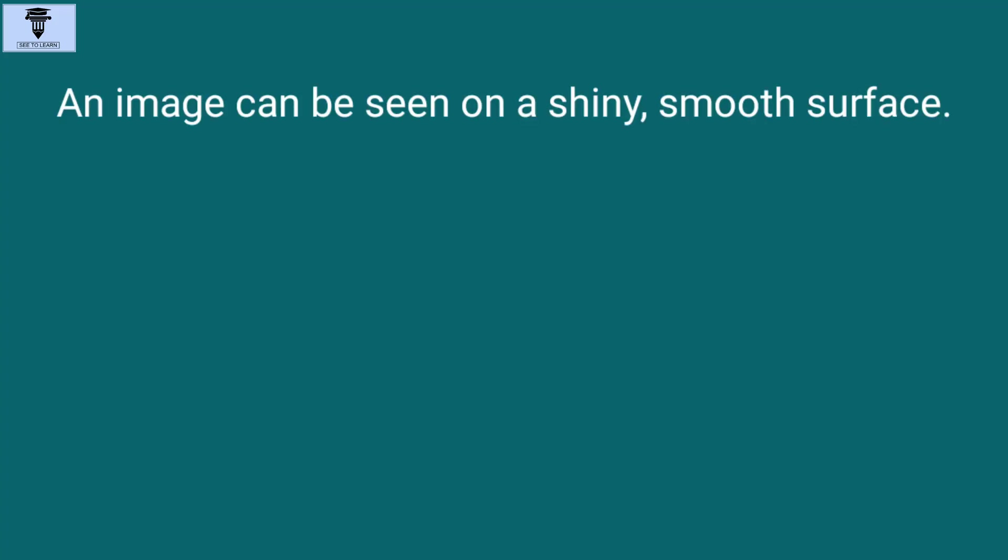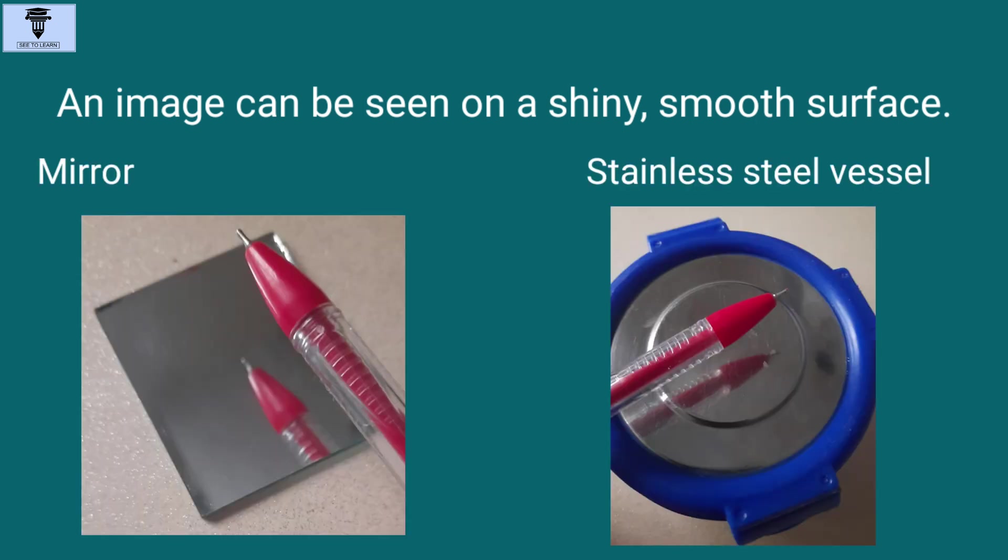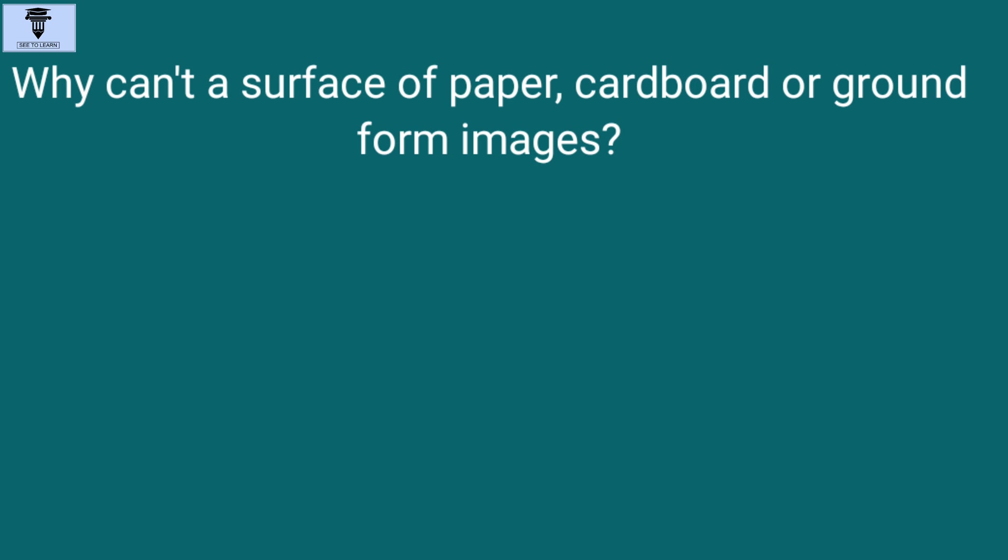Now, you know that an image can be seen on a shiny, smooth surface, like that of a mirror, stainless steel vessel, etc. But why can't a surface of paper, cardboard, or ground form images? Doesn't it reflect light?